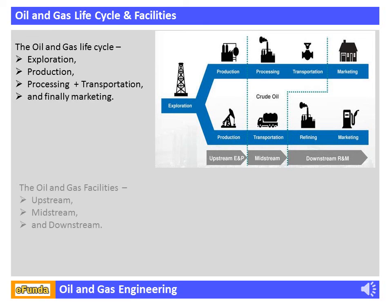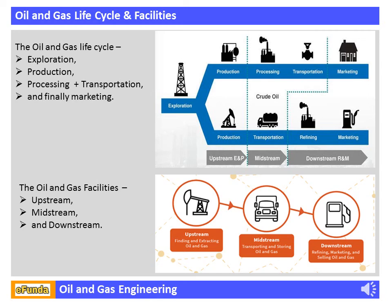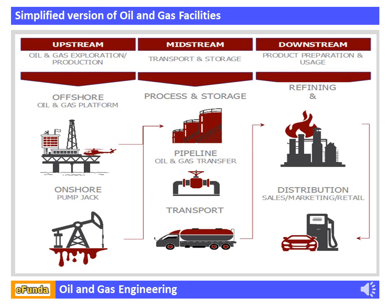The Oil and Gas Life Cycle is mainly divided into upstream, midstream, and downstream facilities. To better understand the concept of oil and gas, the following sections of upstream, midstream, and downstream need to be understood in detail. Now we are moving to a simplified version of Oil and Gas Facilities, which are divided into three sections: upstream, midstream, and downstream.